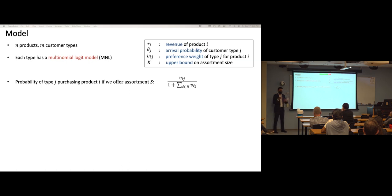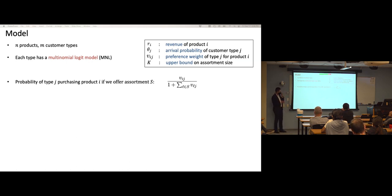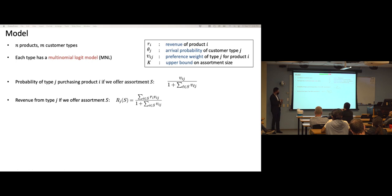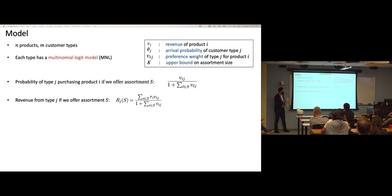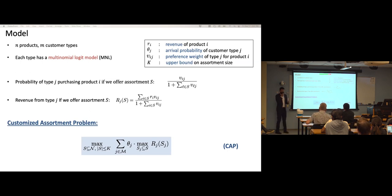Under the MNL model, the probability of customer type j purchasing product i when offered assortment S is the preference weight v_{ij} divided by the sum over all alternatives plus one (the no-purchase option normalized to one). This captures substitution effects. The expected revenue from customer type j given assortment S — denoted R_j(S) — is the sum over products in S of revenue times purchase probability.